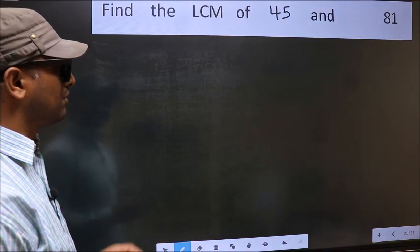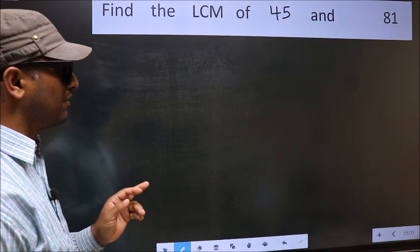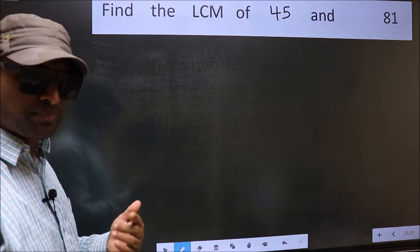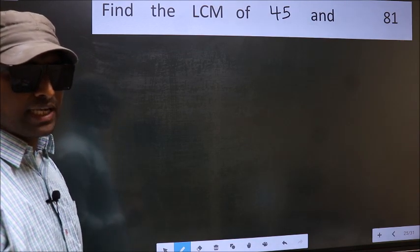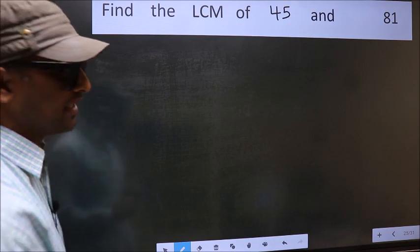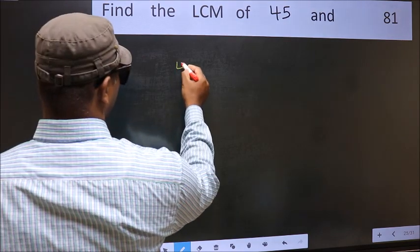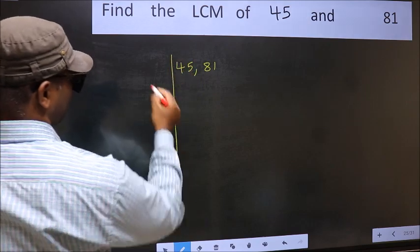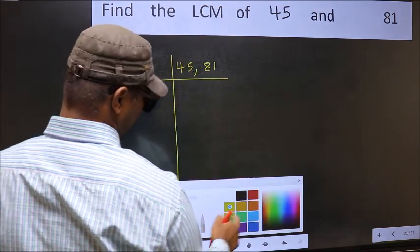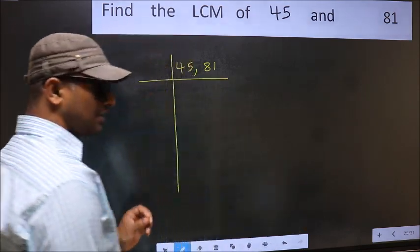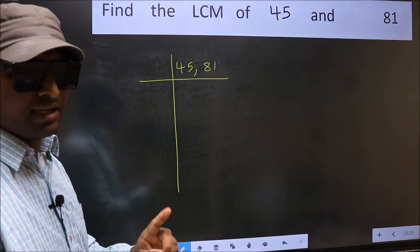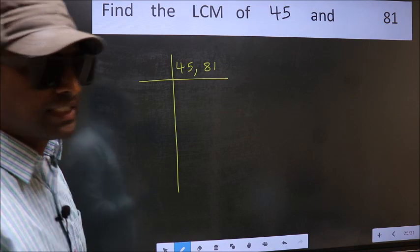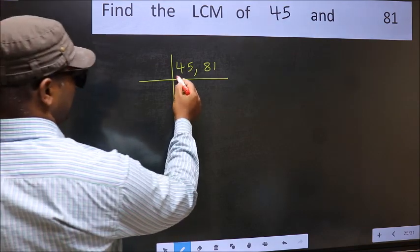Find the LCM of 45 and 81. To find the LCM, we frame it in this way: 45, 81. This is step one. Now focus on the first number, which is 45.